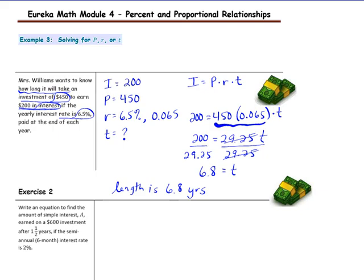Notice that the interest rate is for the entire year, and 6.8 years means the 0.8 is not a whole year. In order to earn the interest for that year, you must keep your money in the bank for the whole year. For that reason, we will need to round this up to seven years. Interpreting your answer is important so that you would earn the interest on that last year.